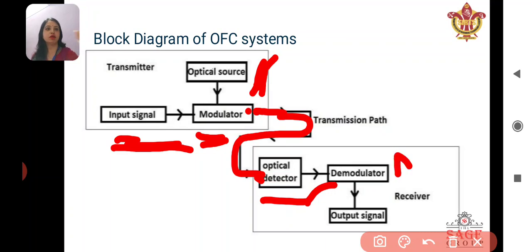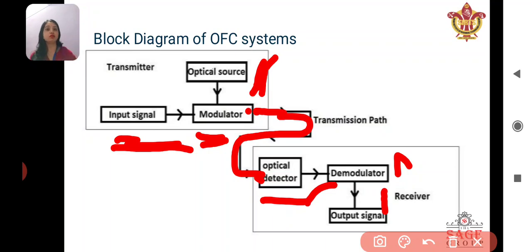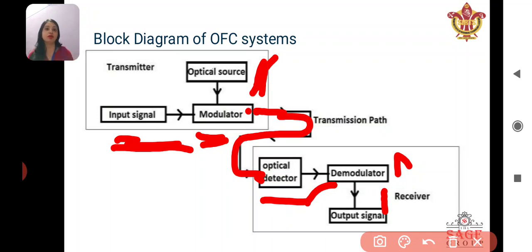The demodulator suppresses the carrier and recovers the original signal. So the complete process is: transmit the signal, modulate it, transmit it through the optical fiber, then demodulate it, separate it, filter it, and deliver the original message to the receiver.